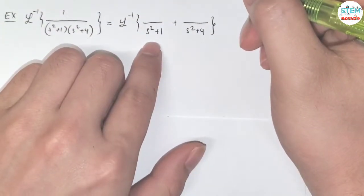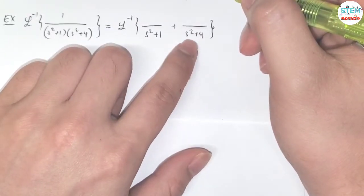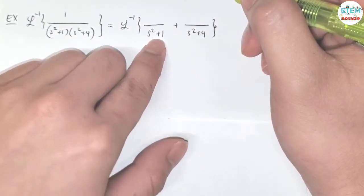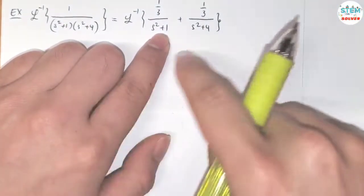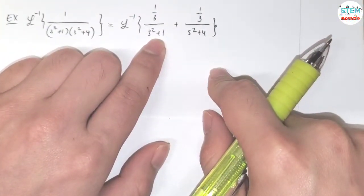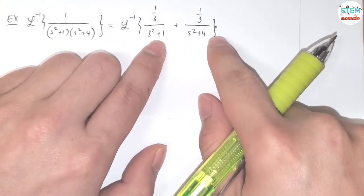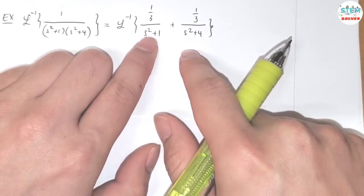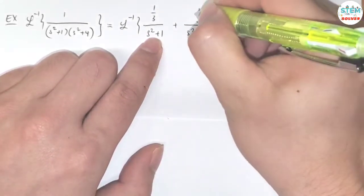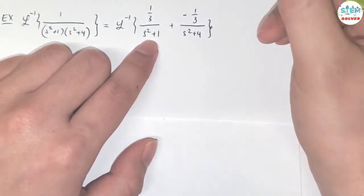As you notice, they are off by 3, so I'm going to have 1 third on the numerator, and the next step is to determine which one has the negative sign. So as I experienced, the bigger one will carry the negative sign, so x squared plus 4 is the bigger one, so it has the negative sign.